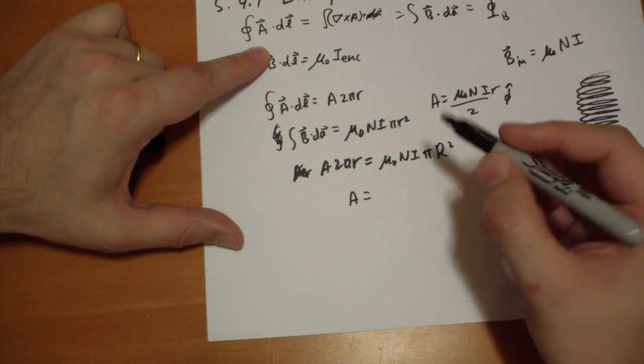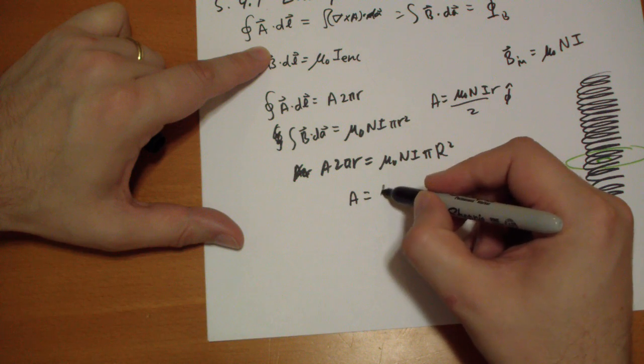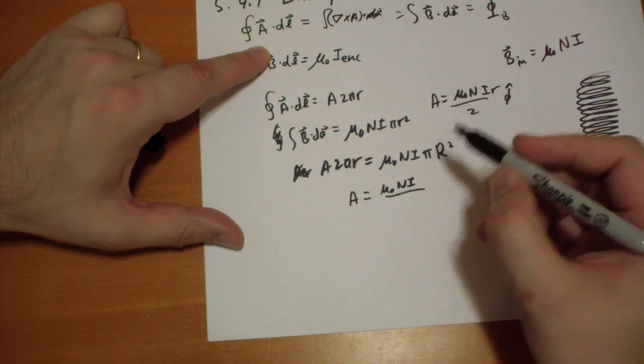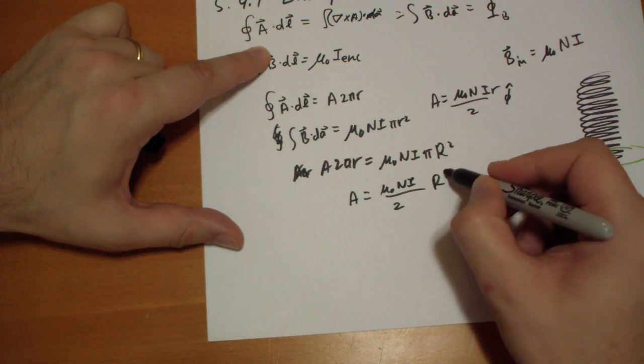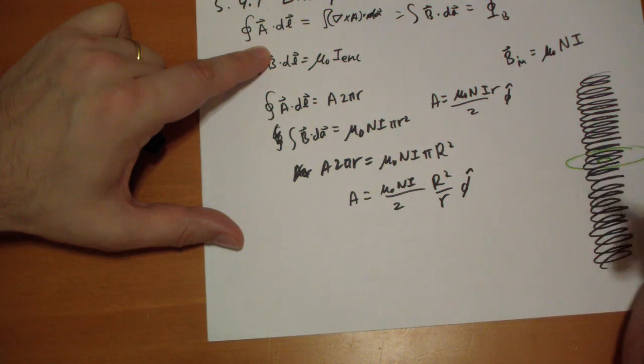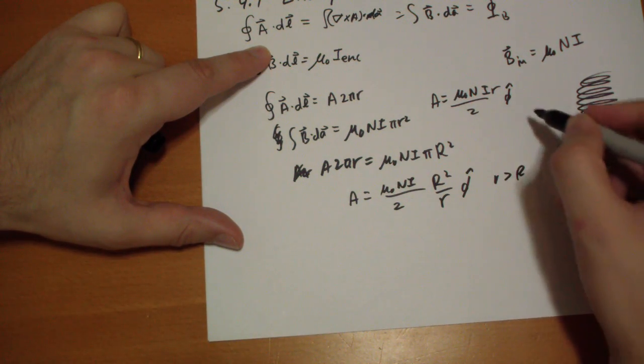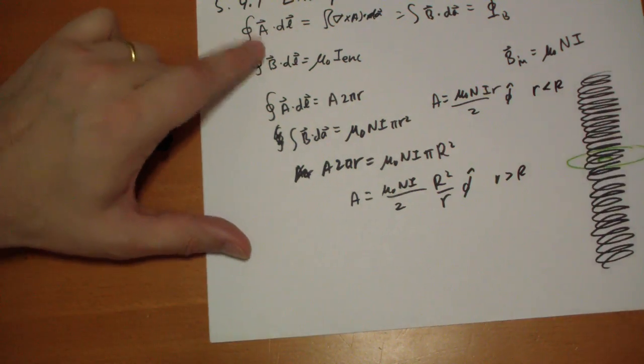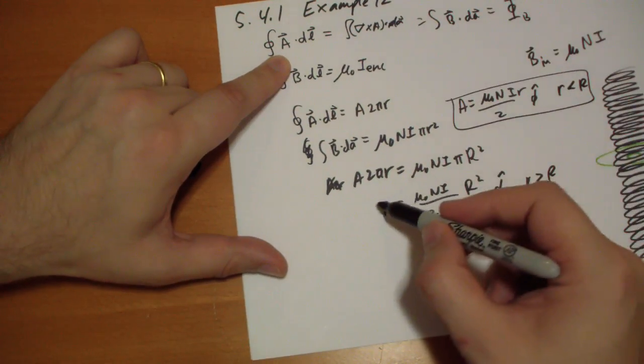So we get A is equal to mu naught n i all over 2, r squared over r in the phi hat direction. Okay, that's for r is greater than R. This is for r is less than R. There is our solution.